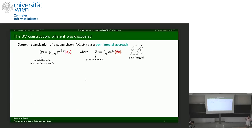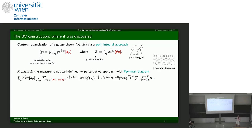Now let's consider the BV construction. The context is quantization of gauge theories via the path integral approach, where one considers the expectation value of a regular function over configuration space — with the action appearing in the exponent. The measure is problematic (not well defined), so one approach is via perturbation theory and Feynman diagrams, going from an ill-defined integral to a sum over critical points of the action functional.